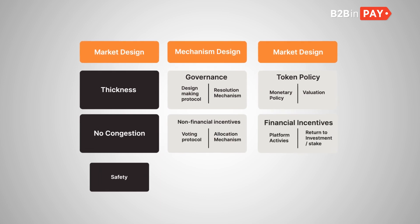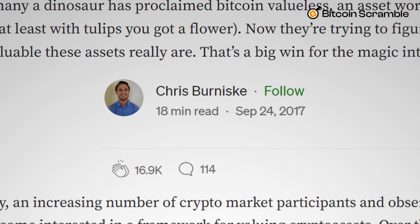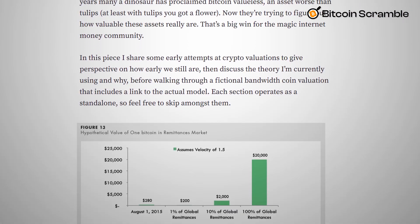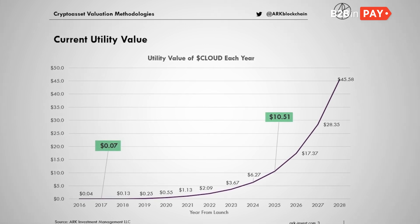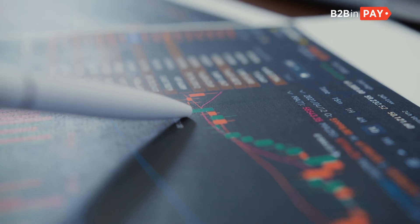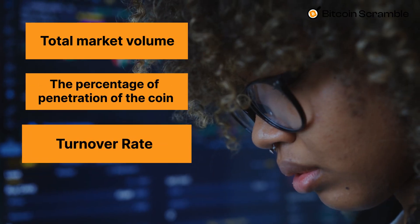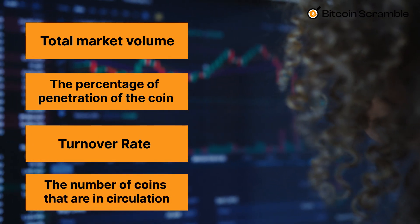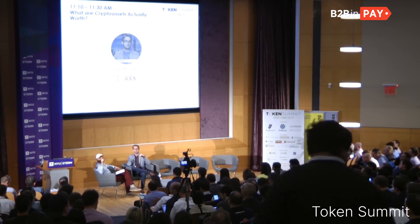Modern tokenomics is based on several methods of calculating the value of a token. One of the most popular is Chris Bernisky's model, which laid the basic principles of modern tokenomics. The specialist began developing his model in 2014, wanting to understand what factors would affect Bitcoin pricing. In his work, Bernisky paid attention to the following indicators: total market volume, the percentage of penetration of the coin, turnover rate, and the number of coins that are in circulation. The model was first applied in practice in 2015, and since then it has been put to use in crypto economics.